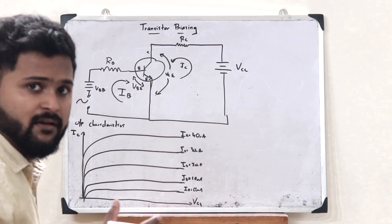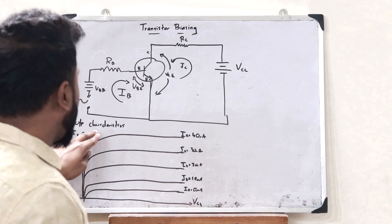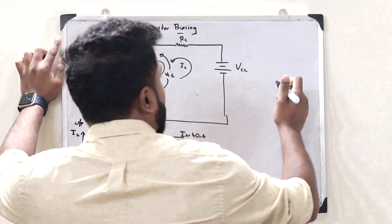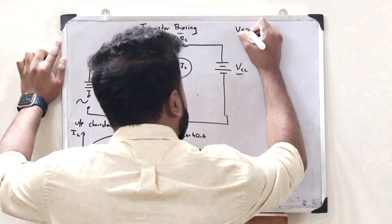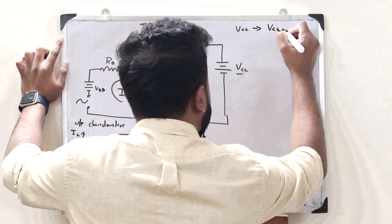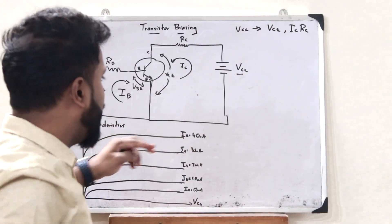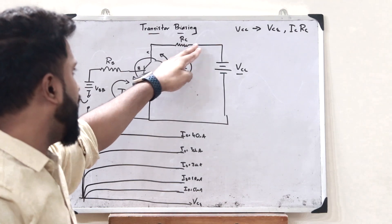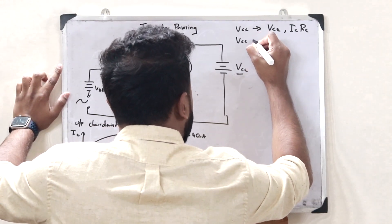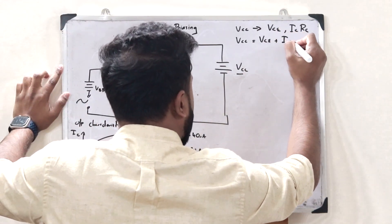What we have to do now is plot something referred to as the load line of this output characteristic. In order to plot a load line, we have to observe this particular loop. What we observe is that the voltage VCC gets divided into two parts: VCE and ICRC. So according to Kirchhoff's law, VCC is equal to the sum of these two divided parts, that is VCE plus ICRC.